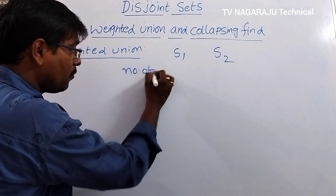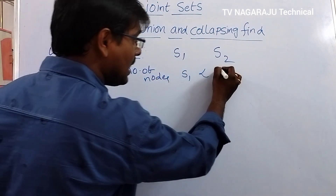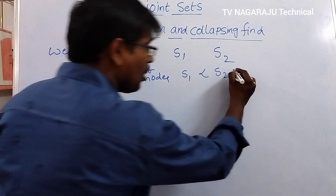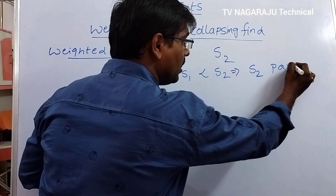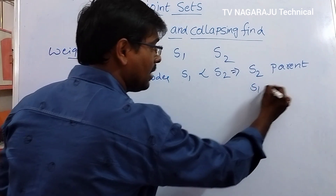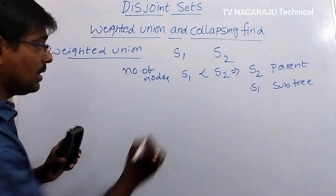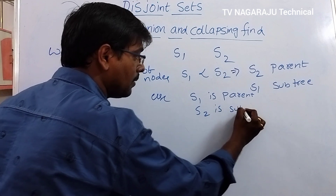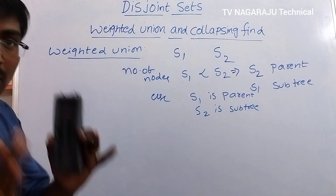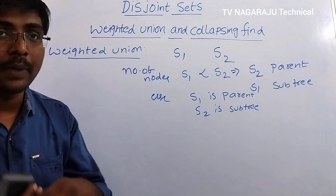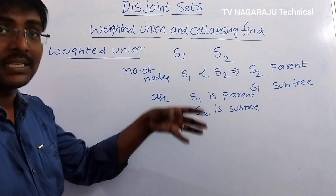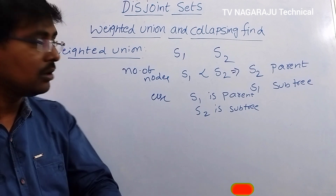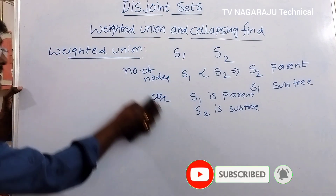If the number of nodes in S1 is less than S2, then S2 becomes the parent tree and S1 becomes the sub-tree. Otherwise, S1 is the parent and S2 is the sub-tree. In simple terms, if you have two trees, which tree is connected to which one is based on the number of nodes. The tree with the highest number of nodes becomes the parent, and the small tree — the tree with the lowest number of nodes — is connected to the tree with the highest number of nodes. This is weighted union.